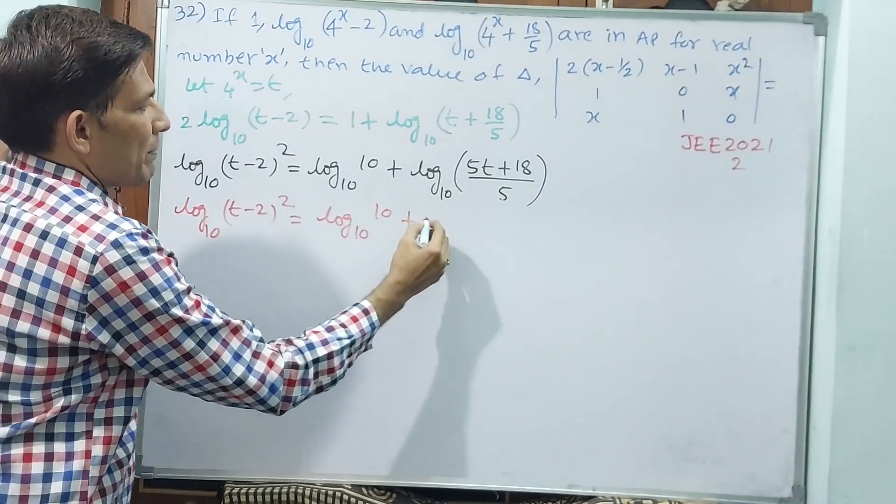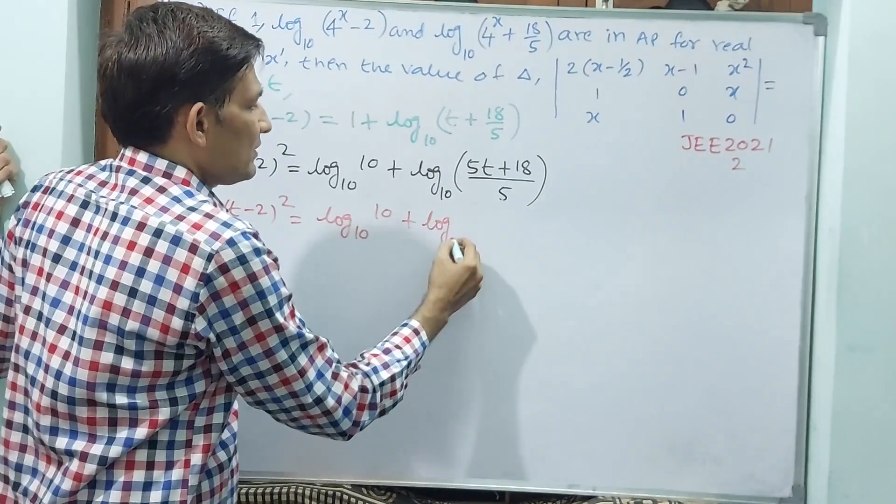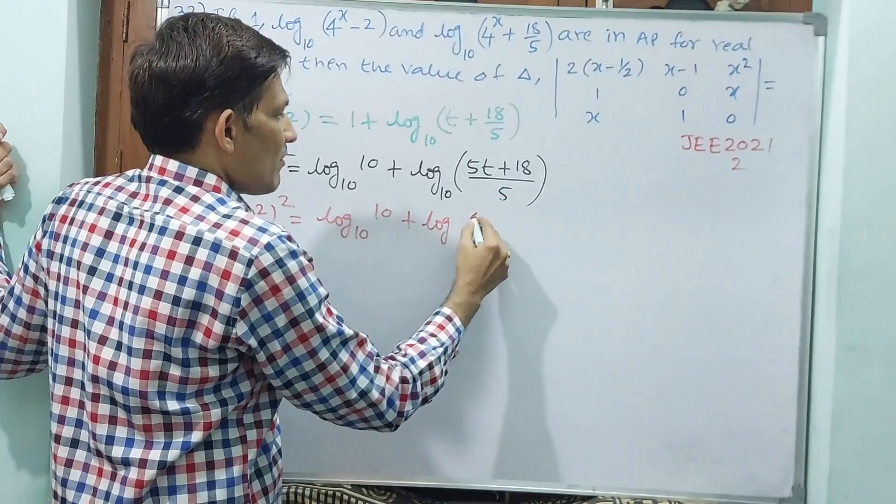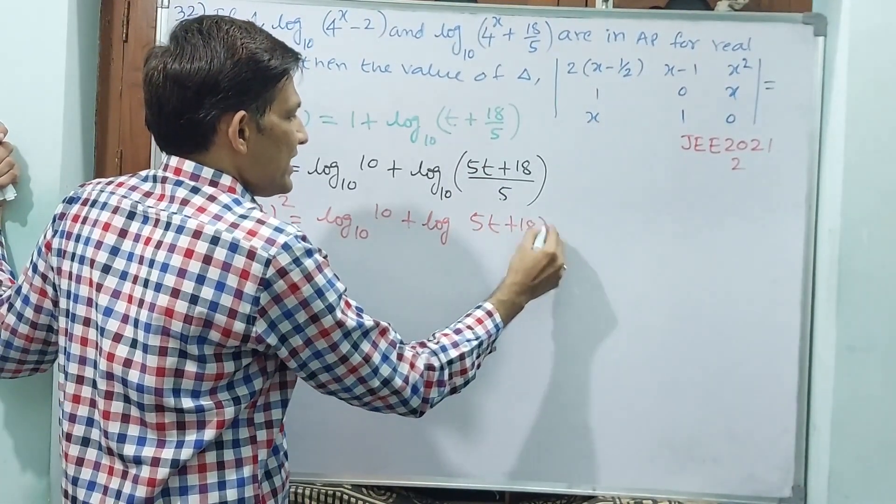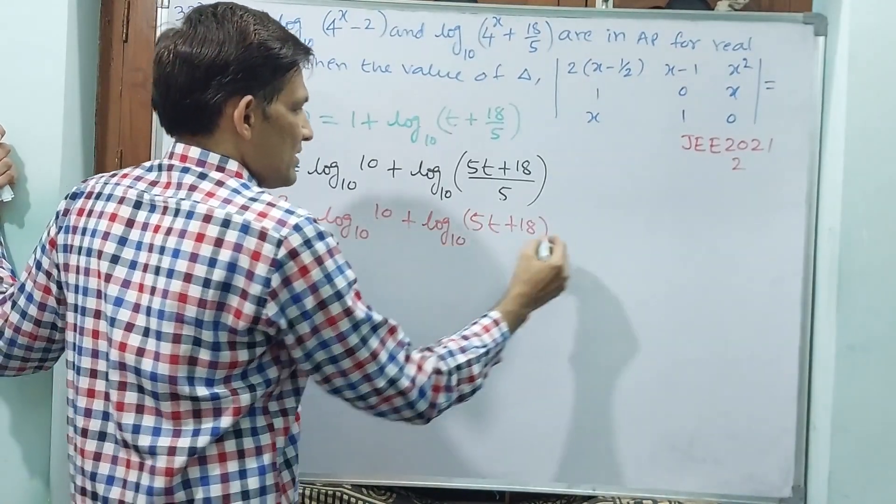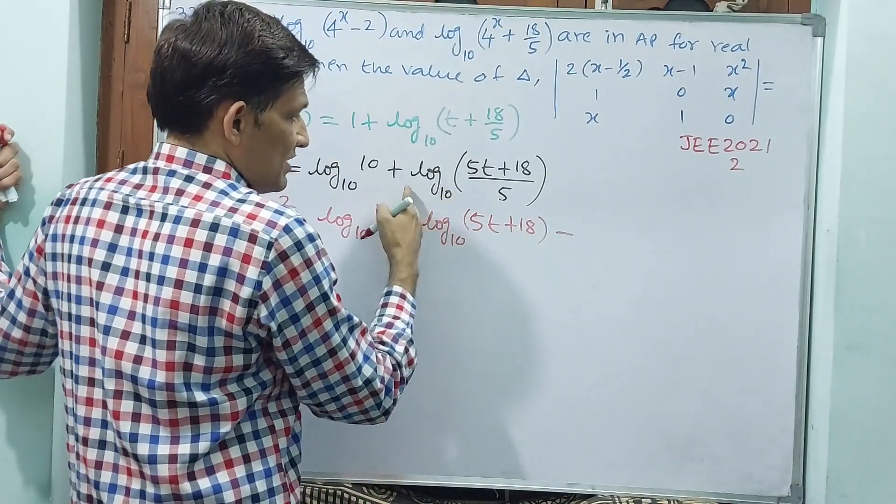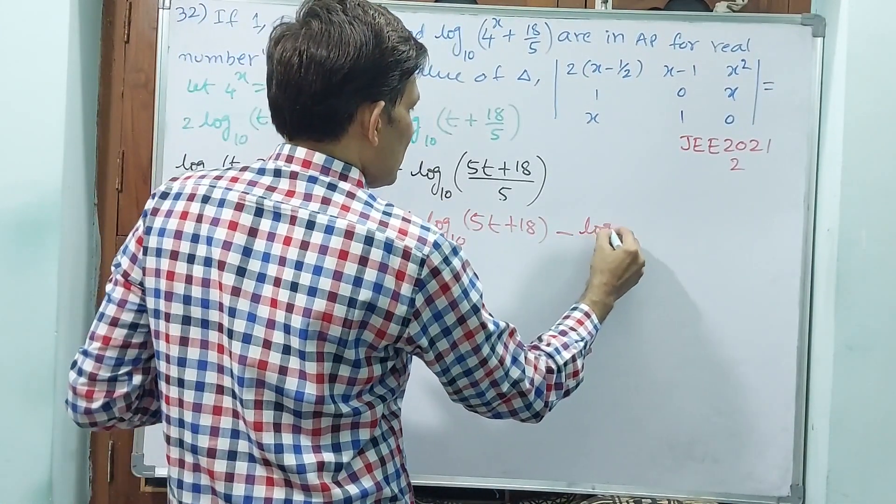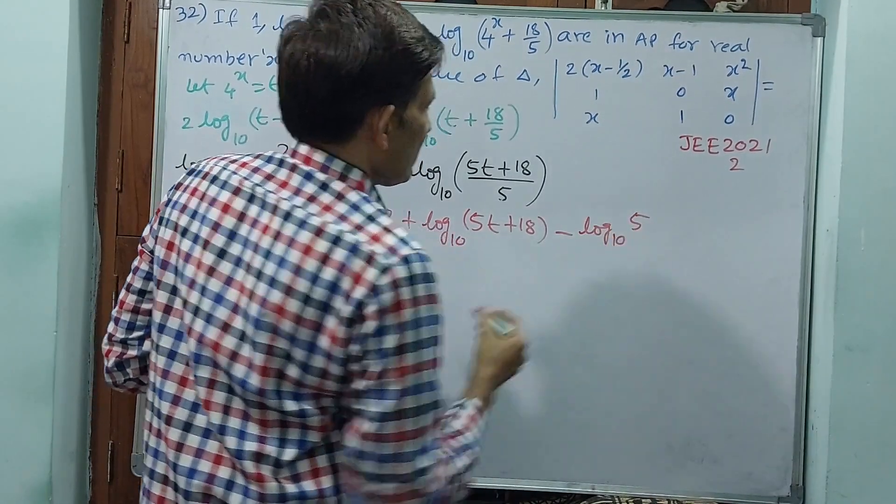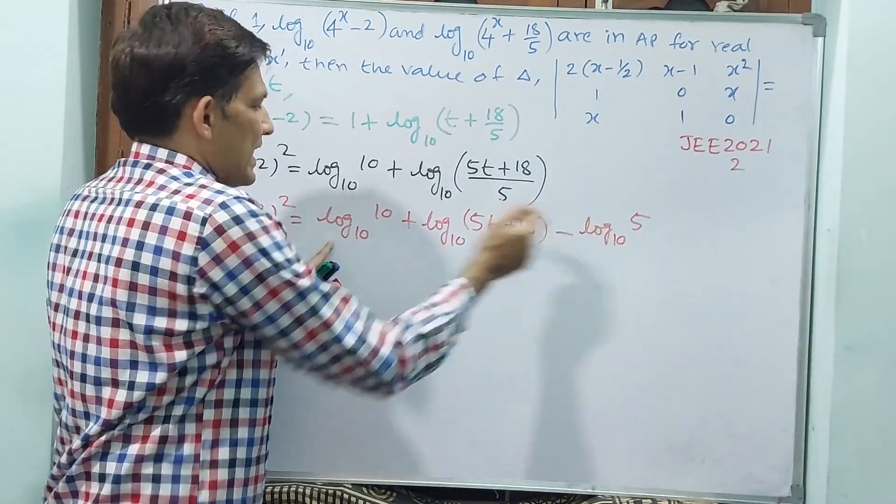Log of 10 to the base 10 plus log of (t - 2) to the base 10. Okay, now you see these two you tackle.